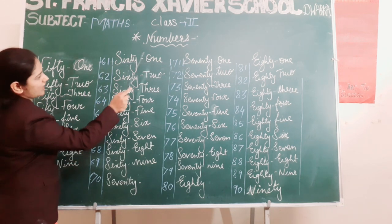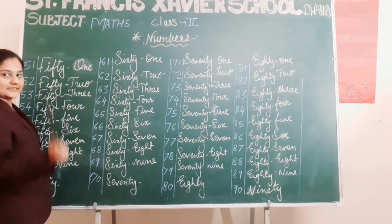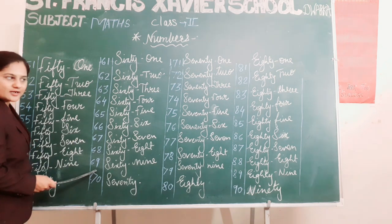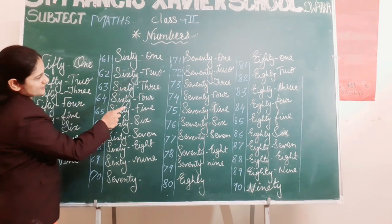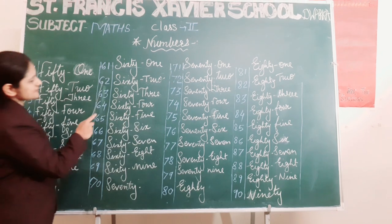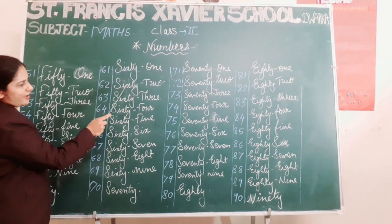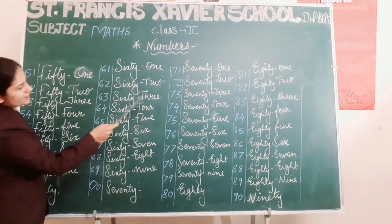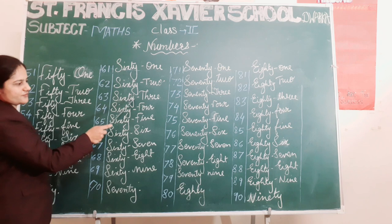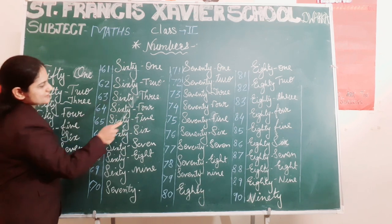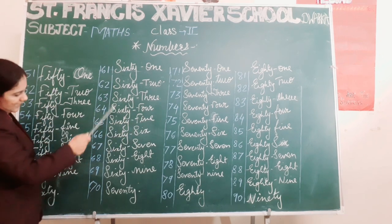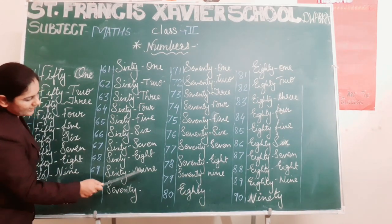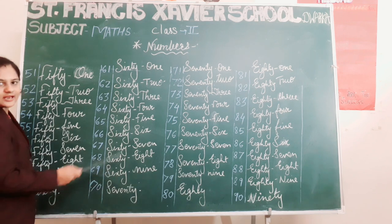S-I-X-T-Y O-N-E, 61. Like the same for the numbers 62 to 69: S-I-X-T-Y T-W-O, 62. S-I-X-T-Y T-H-R-E-E, 63. Like this up to 69: S-I-X-T-Y N-I-N-E, 69.